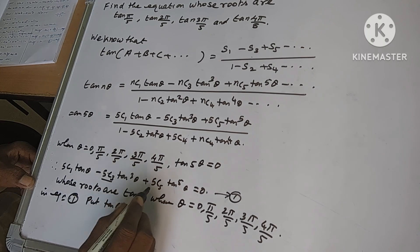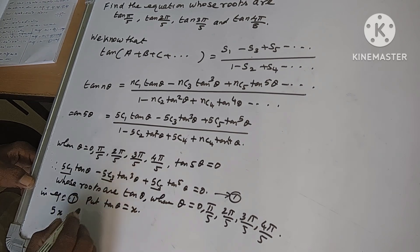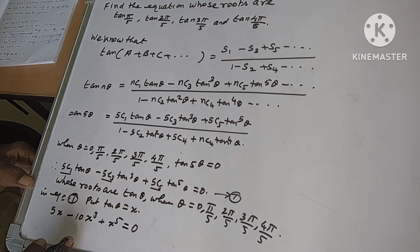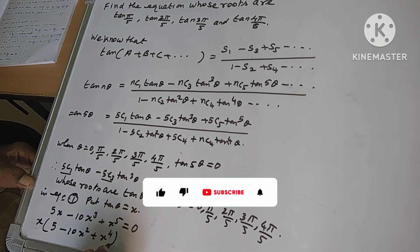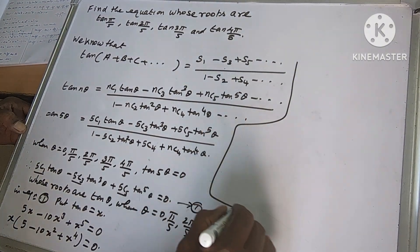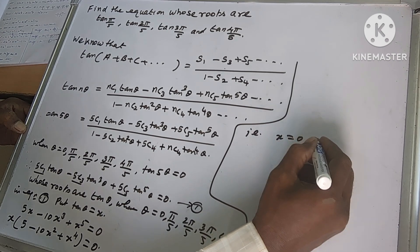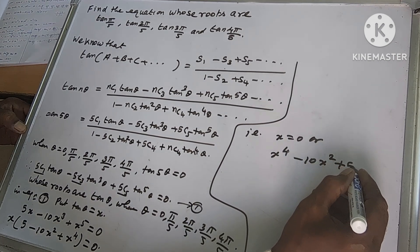So now, applying the substitution, 5C1 is 5 so we get 5x, minus 5C3 which is 10, giving 10x³, plus 5C5 which is 1, giving x⁵, all equal to zero. Taking x common outside: x times (5 minus 10x² plus x⁴) equals zero. So x equals zero, or x⁴ minus 10x² plus 5 equals zero.